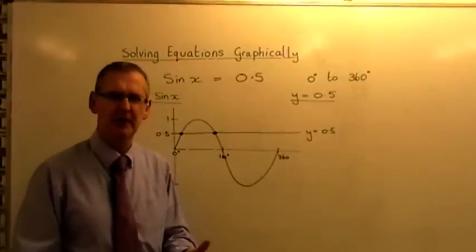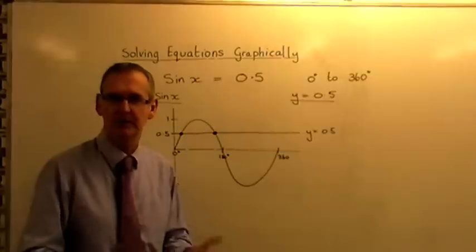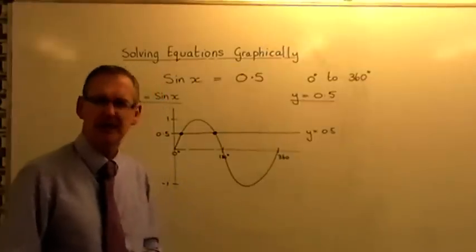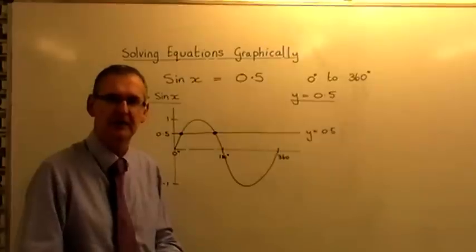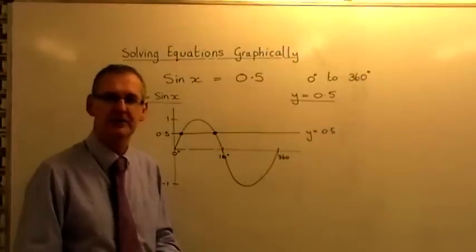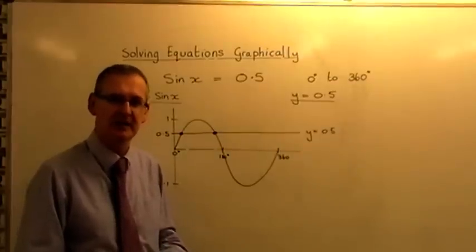Now, if you were to just do it on a calculator, using your SOHCAHTOA, or your year 9, year 10 SOHCAHTOA techniques, inverse sine 0.5, the calculator would just throw out one answer, 30 degrees at you.